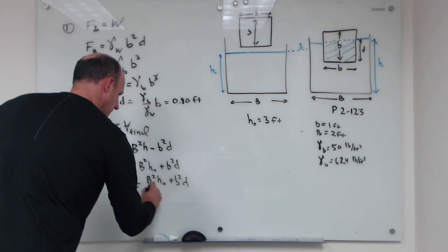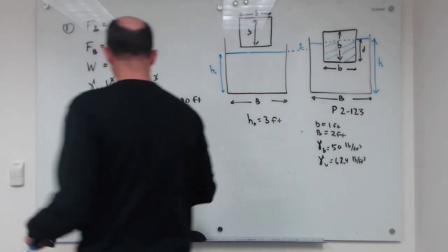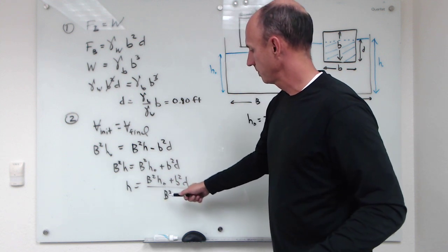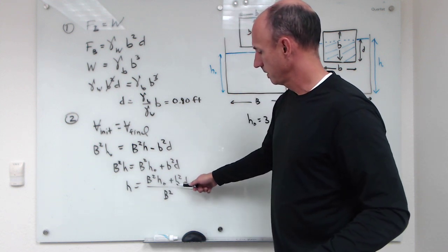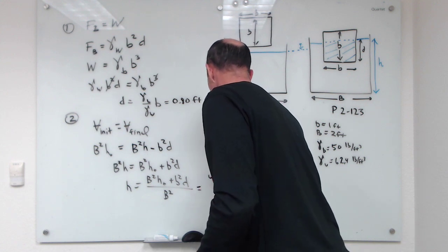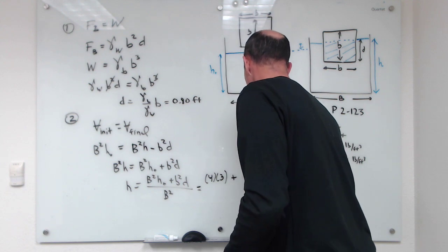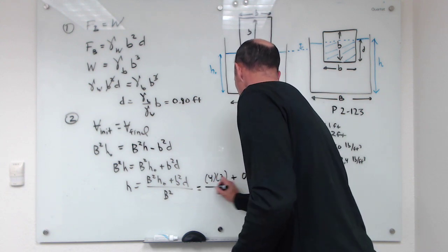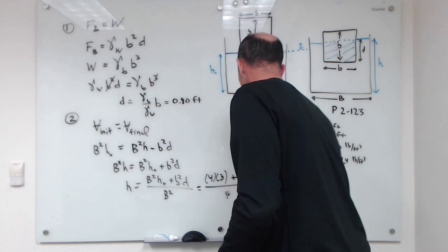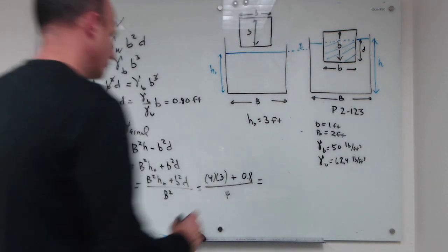H zero plus little b squared over big B squared times D. Big B squared is 2 feet, H zero is 3 feet, little b is 1 foot, so this works out to be 3 plus 0.8 over 4, which equals 3.2 feet.